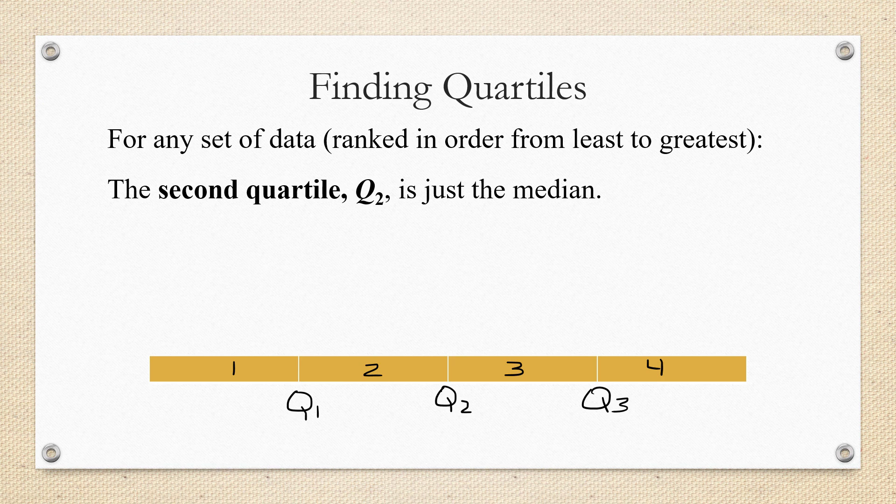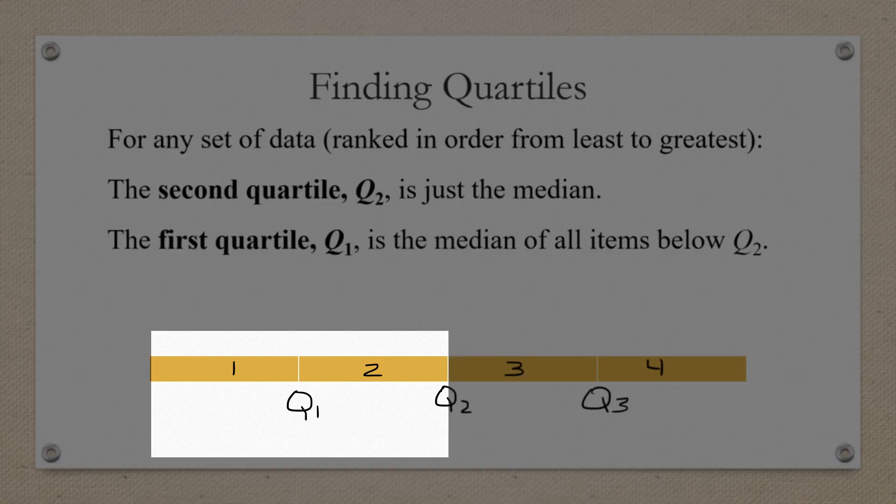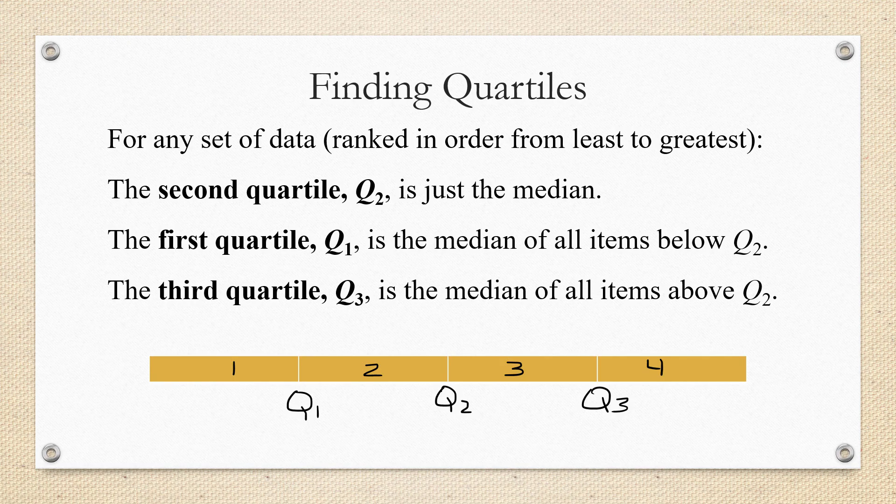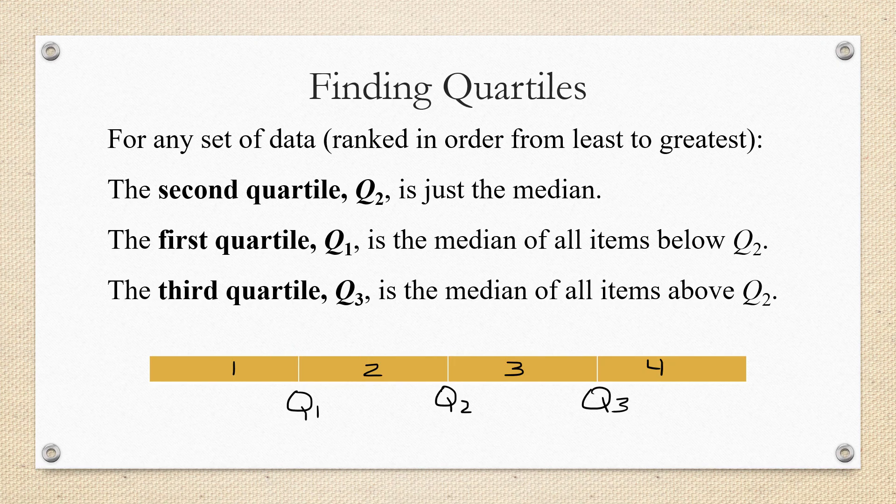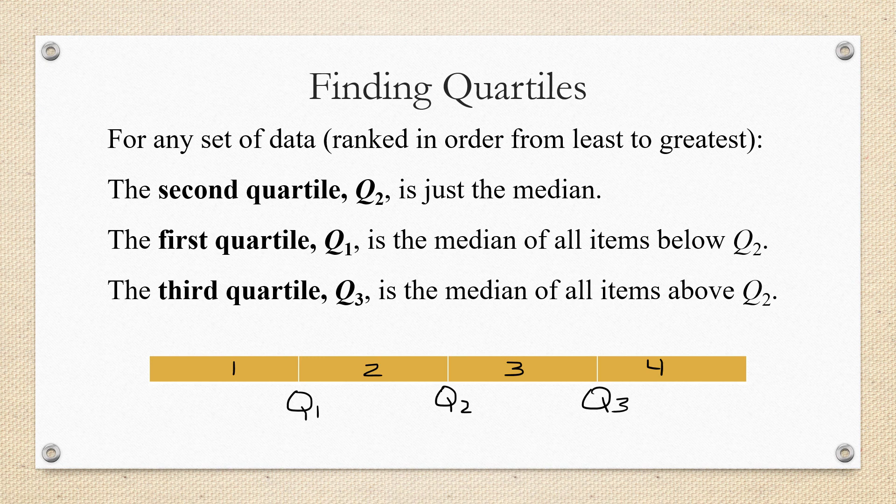We can also observe that Q1 is a kind of median. The first quartile Q1 is the median of all the items below Q2. And similarly, Q3 is the median of all the items above Q2. So we're going to use the idea of finding a median to find our second quartile and then repeat the process for Q1 and Q3.